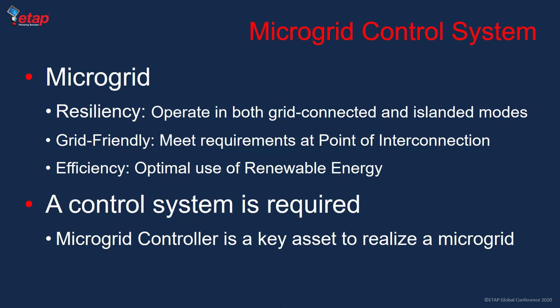For example, if there's excess renewable power compared to loads, the microgrid controller uses energy storage to absorb extra active power and prevent export to the grid. There are also requirements for active and reactive power support during disturbances. Another attribute is efficiency — a microgrid control system allows optimal utilization of renewable energy resources. With energy storage, you can do peak shaving, price arbitrage, and make the microgrid more efficient in utilizing renewables.